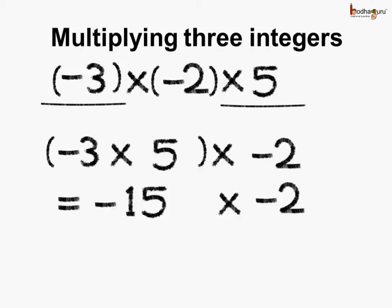Again we have 2 negative numbers, so the answer would be a positive number. 15 multiplied by 2 is 30, with a plus sign — which is the same. So the answer is 30.